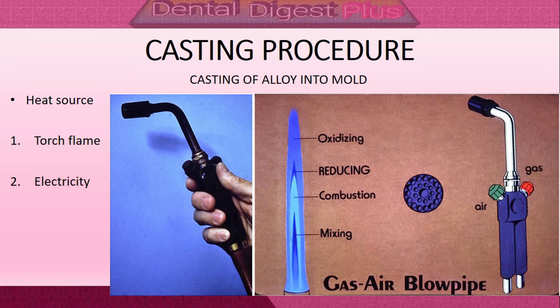In the mixing zone, air and gas are mixed before combustion and there is no heat present. In the combustion zone, gas and air are partially burned; it has an oxidizing nature and should be kept away from molten metal — it is green in color. The reducing zone is the hottest part of the flame, most effective for melting, and should be kept constantly over the alloy — it is blue in color. The oxidizing zone has lower temperature than the reducing zone and oxidizes the metal, so it should never be used for melting alloys.